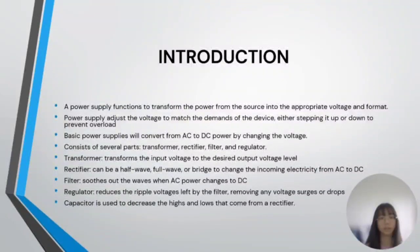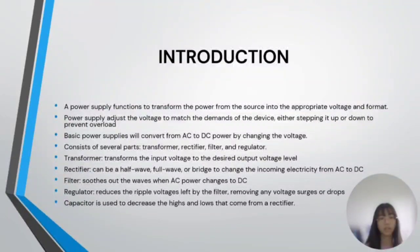A power supply consists of several parts: transformer, rectifier, filter, and regulator. The transformer transforms the input voltage to the desired output voltage level. The rectifier can be a half wave, full wave, or bridge type to change the incoming electricity from AC to DC. The filter smooths out the waves when AC power changes to DC. A regulator reduces the ripple voltage left by the filter by removing any voltage surges or drops. A capacitor is used to decrease the highs and lows that come from a rectifier.